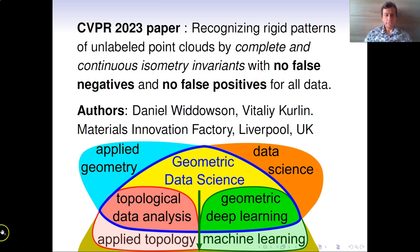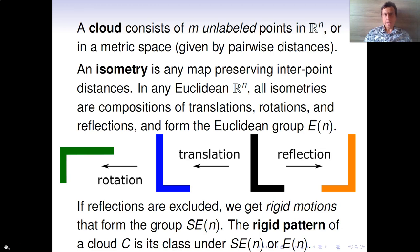Our key object is a cloud of M unlabeled points studied up to isometry. In Euclidean space, isometries decompose into translations, rotations, and reflections and form the full Euclidean group En.